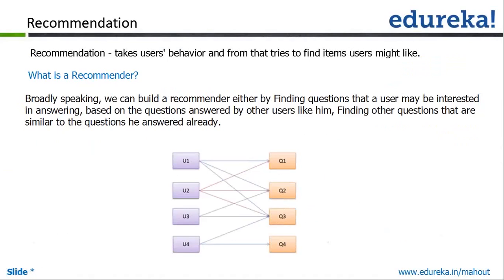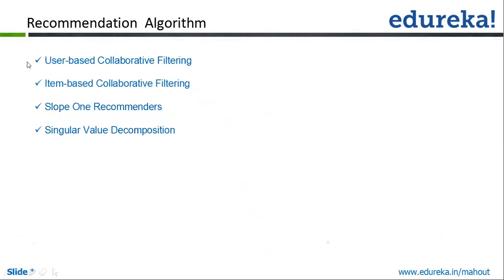More broadly, a recommender system can recommend questions or items to users based on their interests. In frameworks like Mahout, the available algorithm types include: user-based collaborative filtering, item-based collaborative filtering, slope-one recommenders, and singular value decomposition (SVD). We will look at many of these algorithms in this module and the next module.